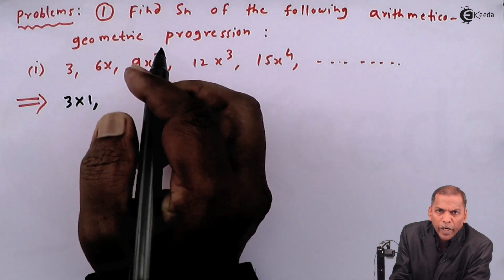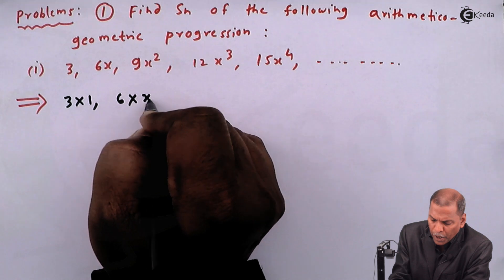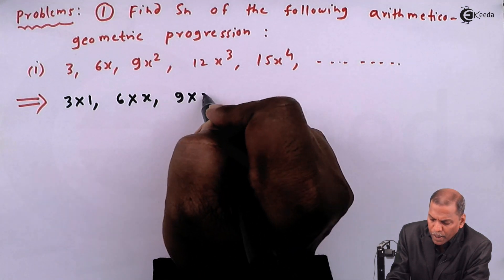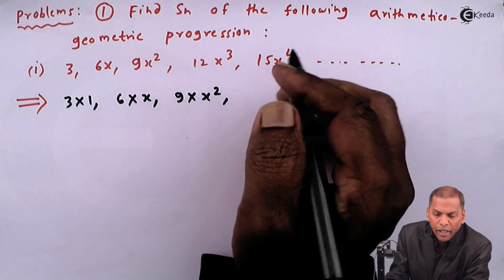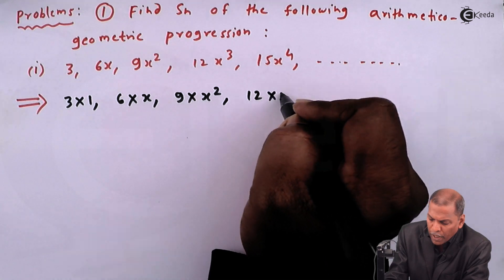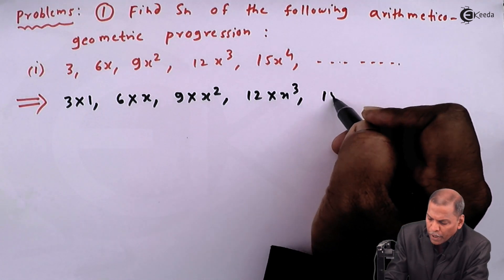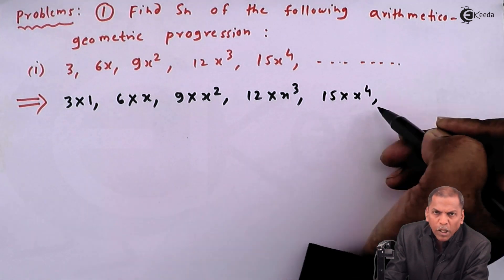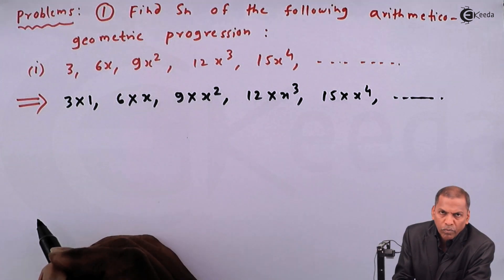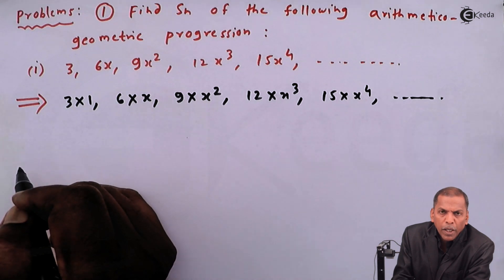First of all, the given terms can be written in factored form as: 3·1, 6x written as 6·x, 9x² written as 9·x², 12x³ written as 12·x³, and 15x⁴ written as 15·x⁴, and so on. Now we have to consider the numbers separately.